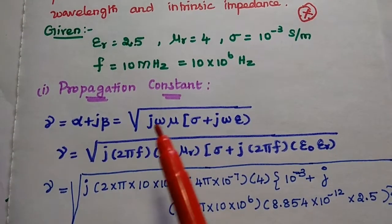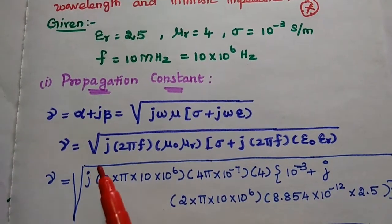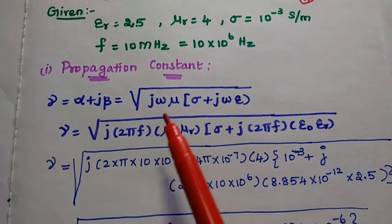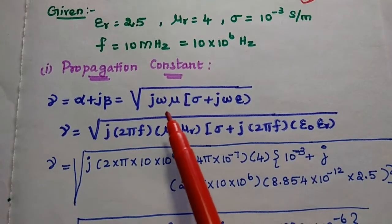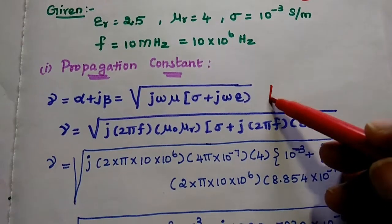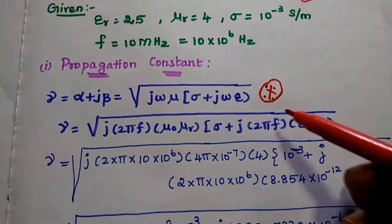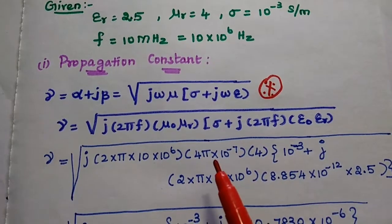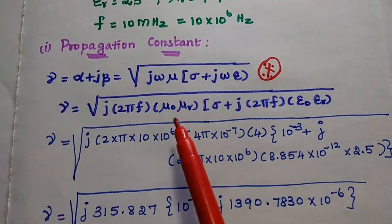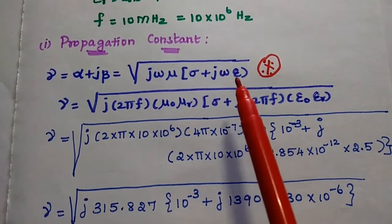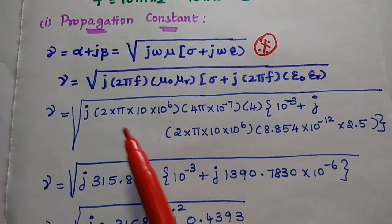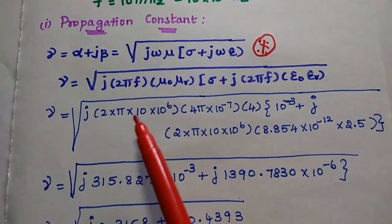Now we are going to find out the propagation constant: gamma equals alpha plus j*beta, which equals the square root of j*omega*mu into (sigma plus j*omega*epsilon). This is the important formula to find out the propagation constant for a lossy dielectric. Here omega is 2*pi*f, mu is mu_0 times mu_r, and epsilon is epsilon_0 times epsilon_r.